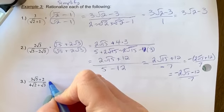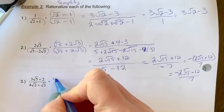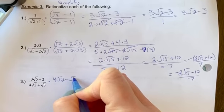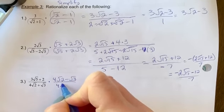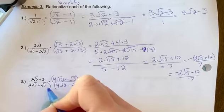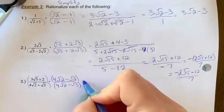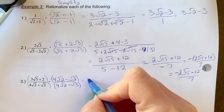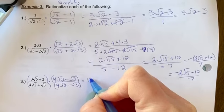Number three, multiply by the conjugate 4 root 2 minus root 3 over 4 root 2 minus root 3. So we have a binomial in the numerator, so we have to FOIL there as well. So multiply, first you're going to get 12 root 10.